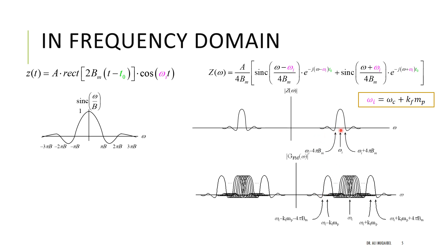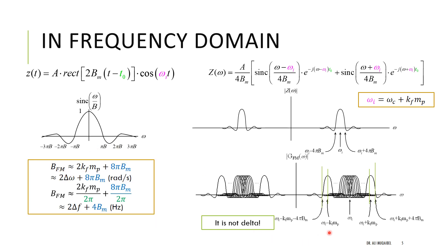There is additional bandwidth due to the sinc spread — our cosine is time-limited, so it produces a sinc in frequency rather than a delta function, and this sinc shifts with the instantaneous frequency. From edge to edge of each sinc lobe we have about 4*B_m. So in total the bandwidth is 2*k_f*M_p for the range of instantaneous frequencies, plus additional 8*B_m: 4*B_m on each side from the sinc spread.